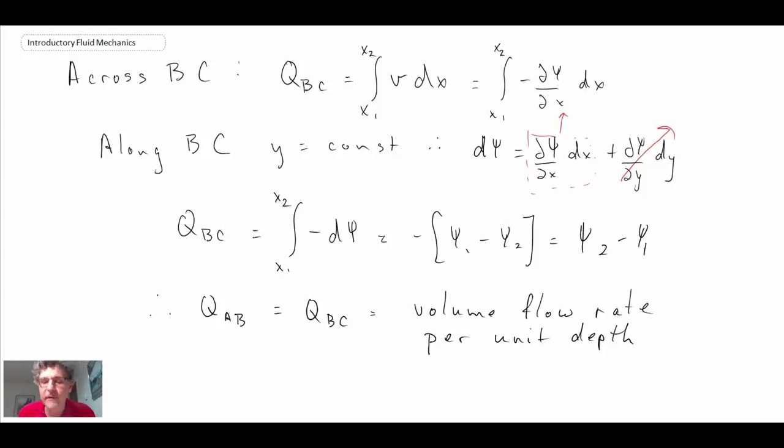That is equal to the volume flow rate per unit depth. So that is one of the principles of the stream function. If you take the difference from one streamline to another, one stream function line to another, you get the volumetric flow rate per unit depth.